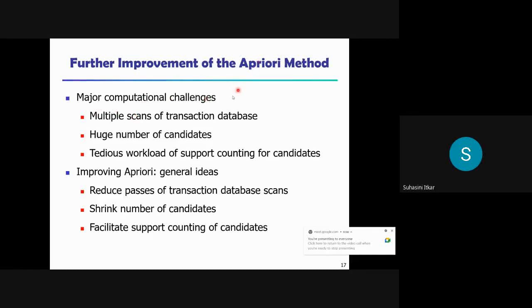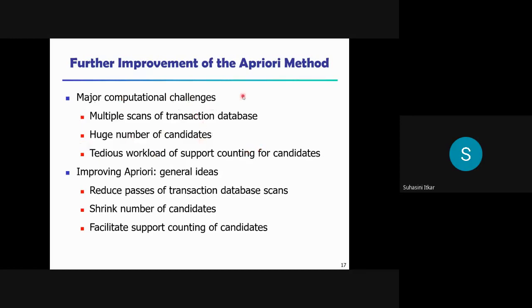The major computational challenges of the Apriori algorithm are that we are scanning the transaction database multiple times. When we go for candidate set generation, it is generating a huge number of candidates. For each candidate set generated, we are again and again scanning the original database and calculating the support count. So it is a tedious workload — these are the major drawbacks of the Apriori algorithm.